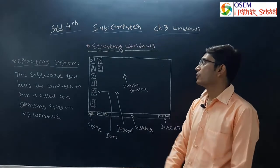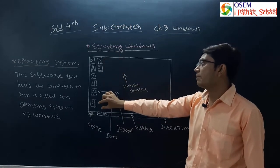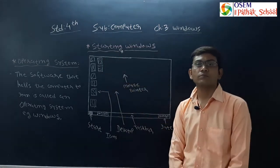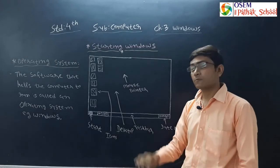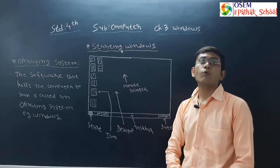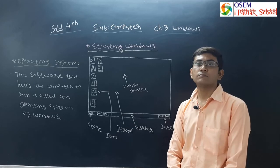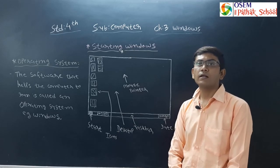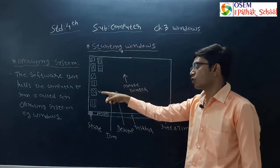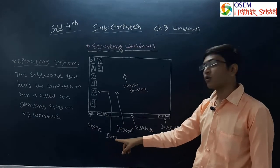Finally, you can see small pictures available on your desktop. These pictures can be different from one computer to another. The small pictures on the desktop are known as icons.